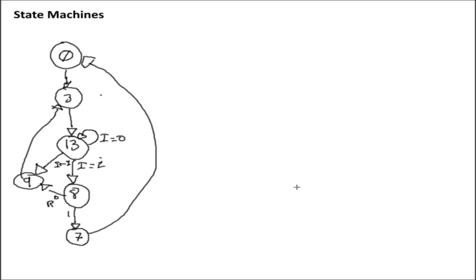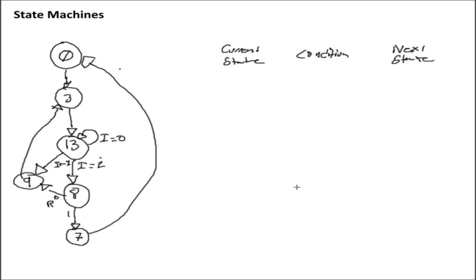Let's take this graph and turn it into a lookup table for a state machine. There are a couple of columns: the first is the current state, we also have the condition, and then based on the current state and the condition we produce a next state. Going through the table: in state zero, there are no conditions, so we transition directly to state three. That is one transition and one entry in our lookup table.